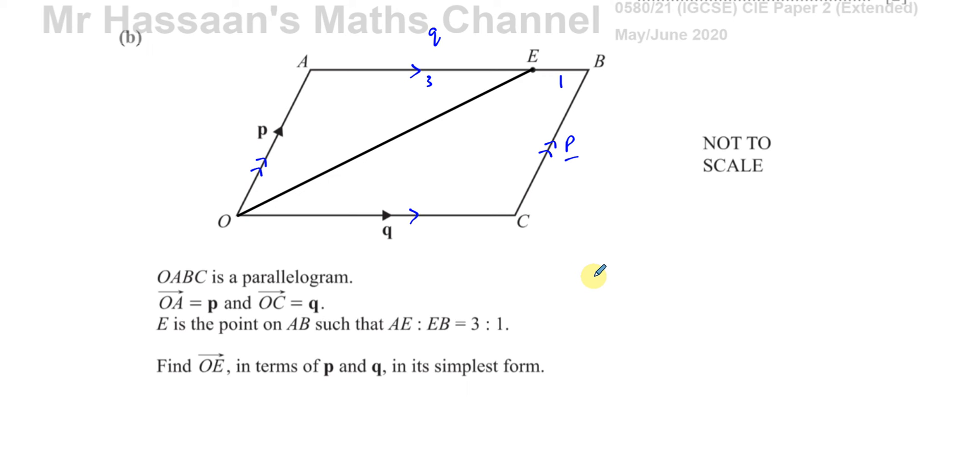Find OE, find OE in terms of P and Q in its simplest form. Now OE, if you think about OE, you're going to go from O to A and then from A to E, that will take you from O to E, you have to start at O and end at E.